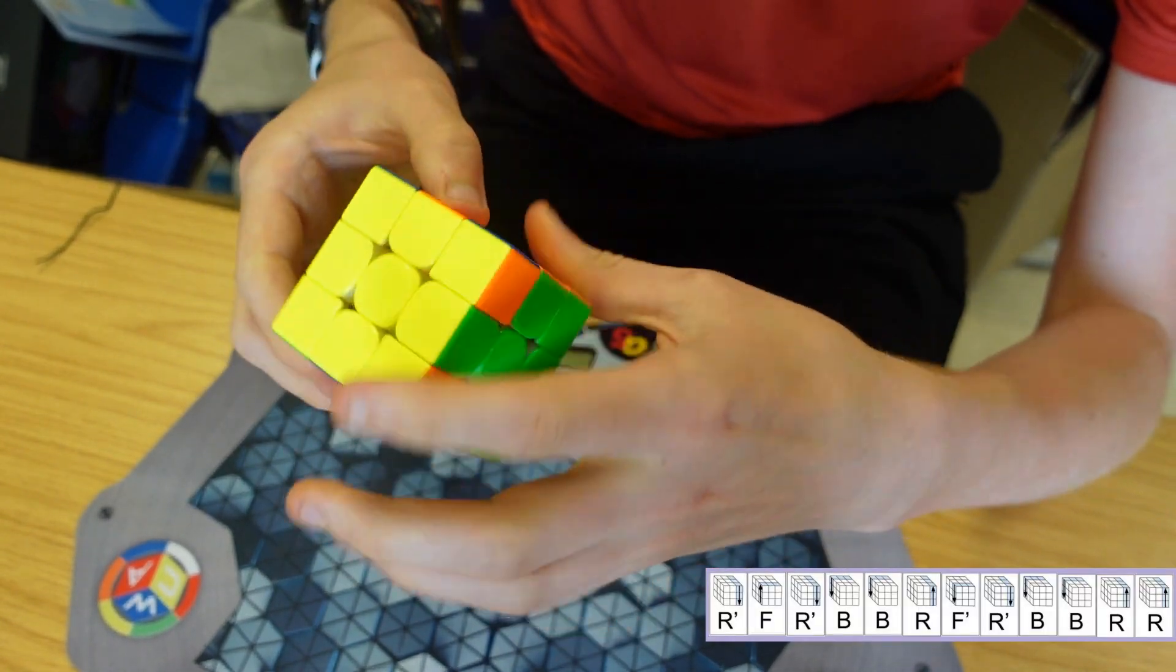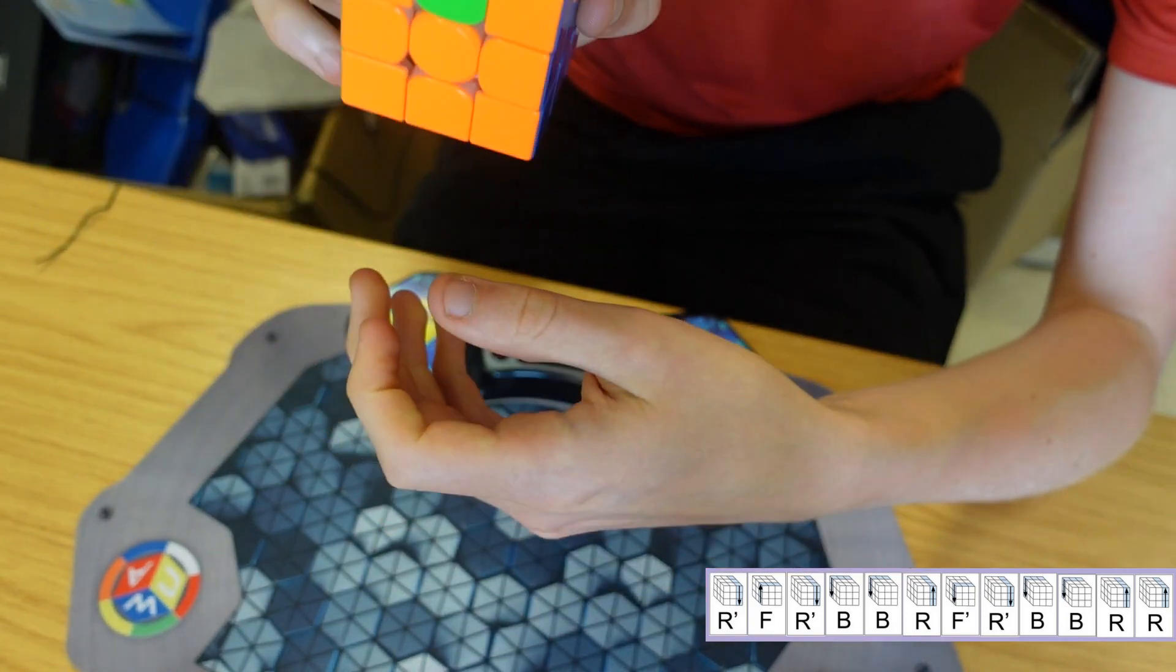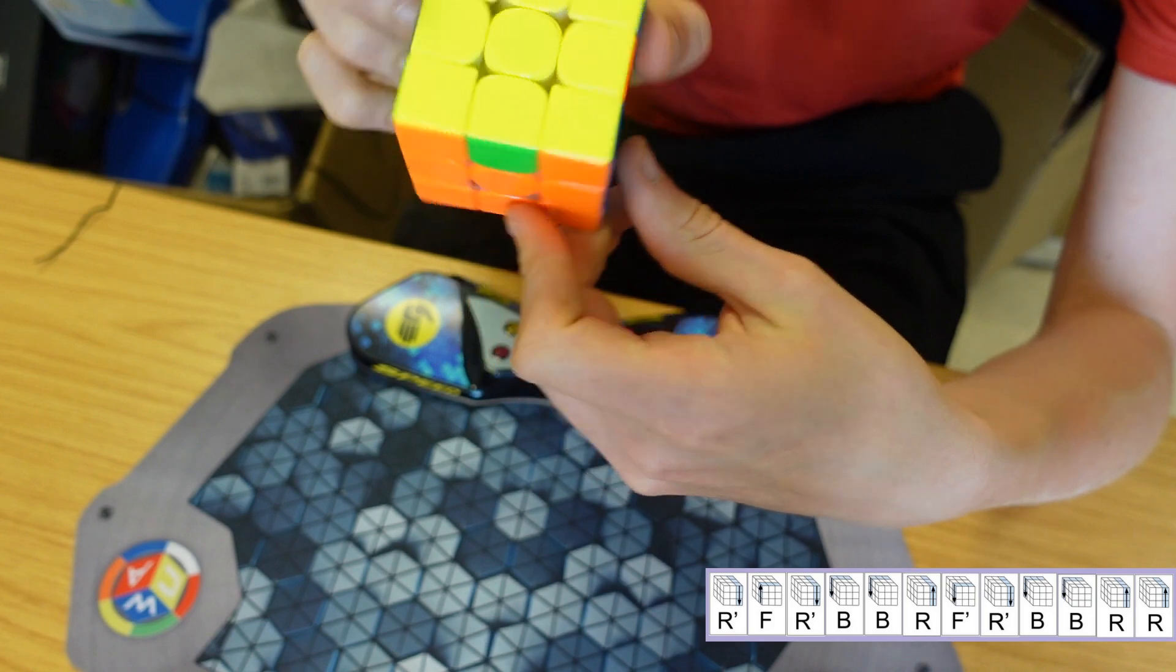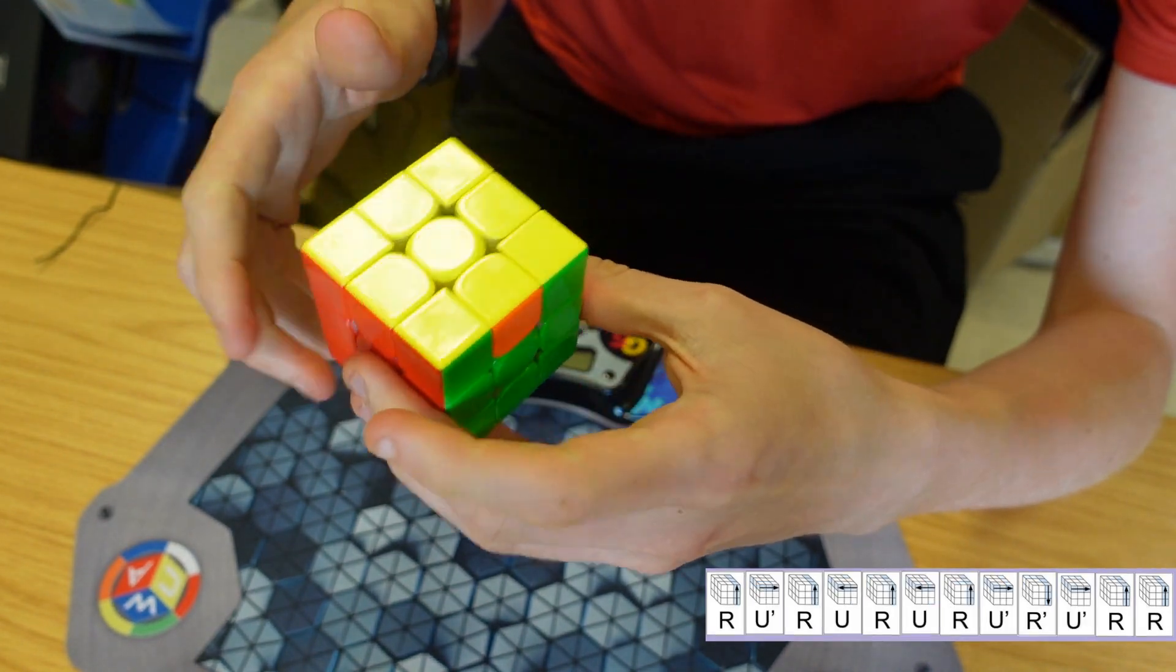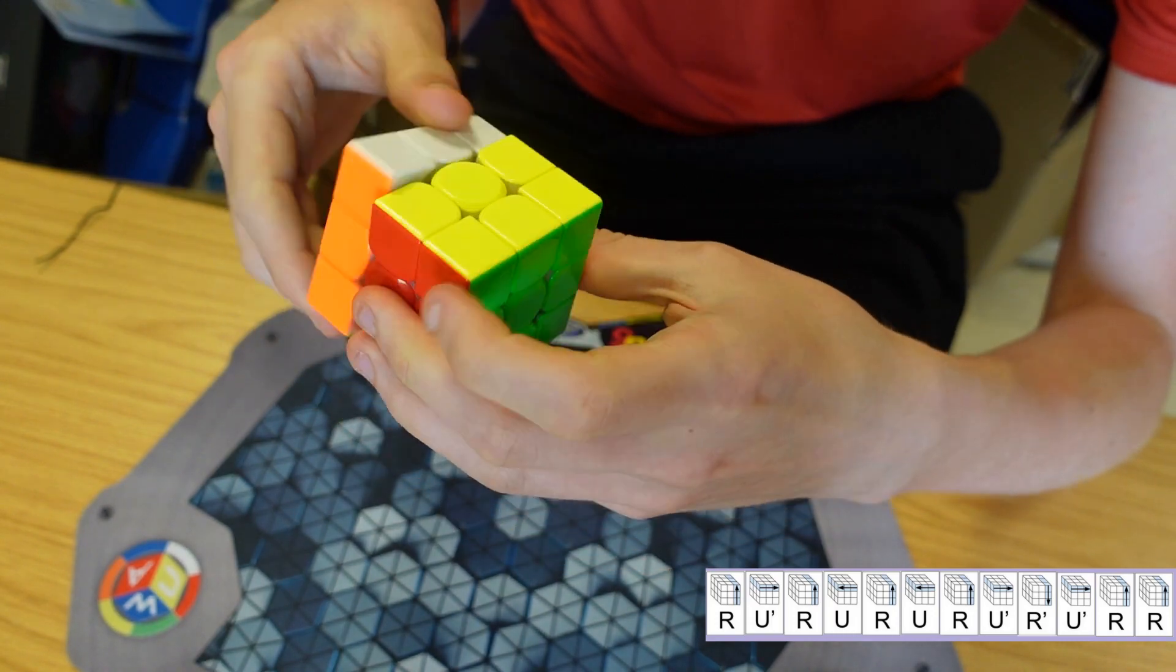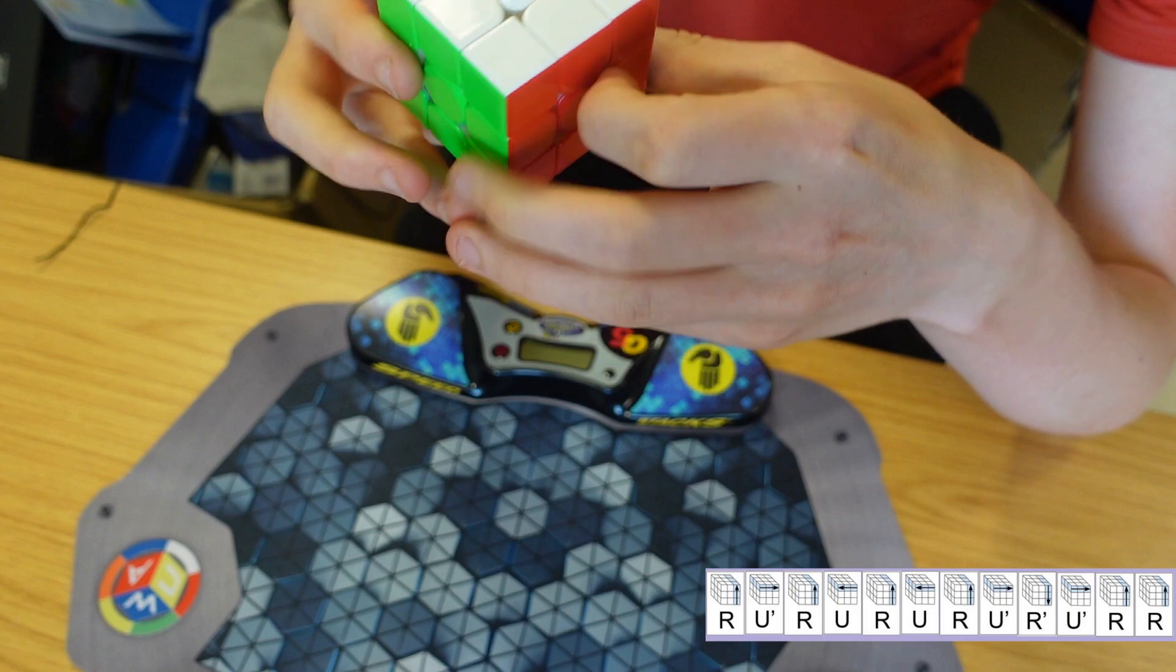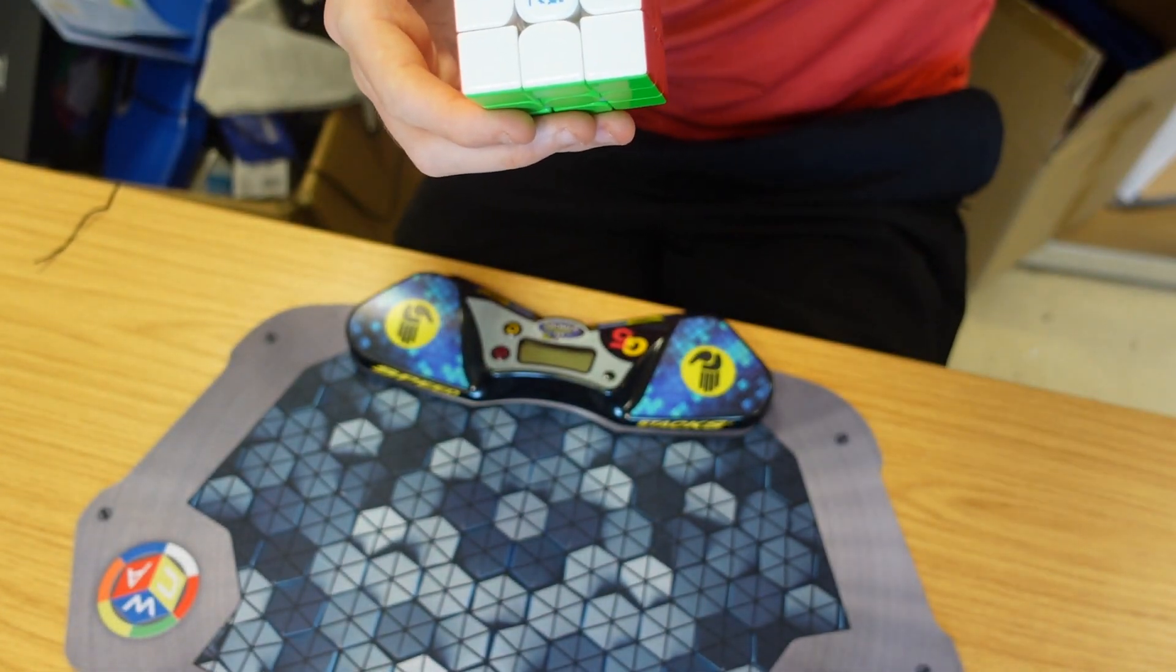Then we need to do another algorithm to cycle the edges. We can cycle it with this algorithm, which we may have to do multiple times and sometimes in different places. There we go, the cube is solved after about two minutes, which is way too long.